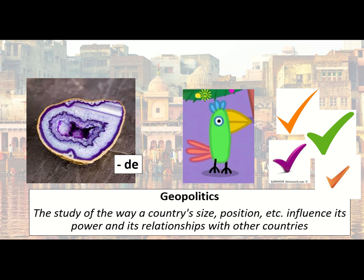For example, when Russia poisoned people in the UK, why did the UK not just storm through and cause all sorts of issues in Russia? You know, geopolitics really covers all of that stuff. We're obviously going to be focusing on the geopolitics of India, but it is a fascinating topic in general, and the relationships between other countries and how fragile or strong they are is something I never get bored of looking into. So geopolitics — make sure you've got the definition written down, and once you have we can do the next dingbat.